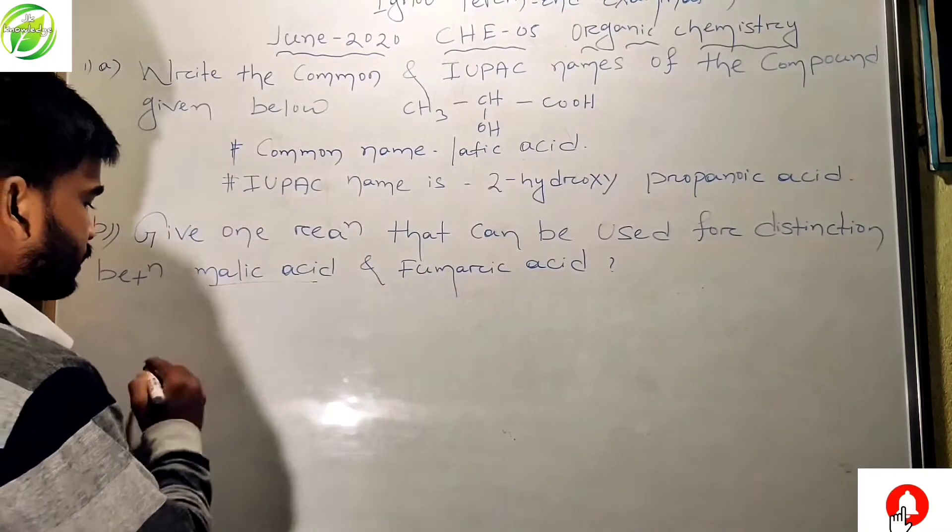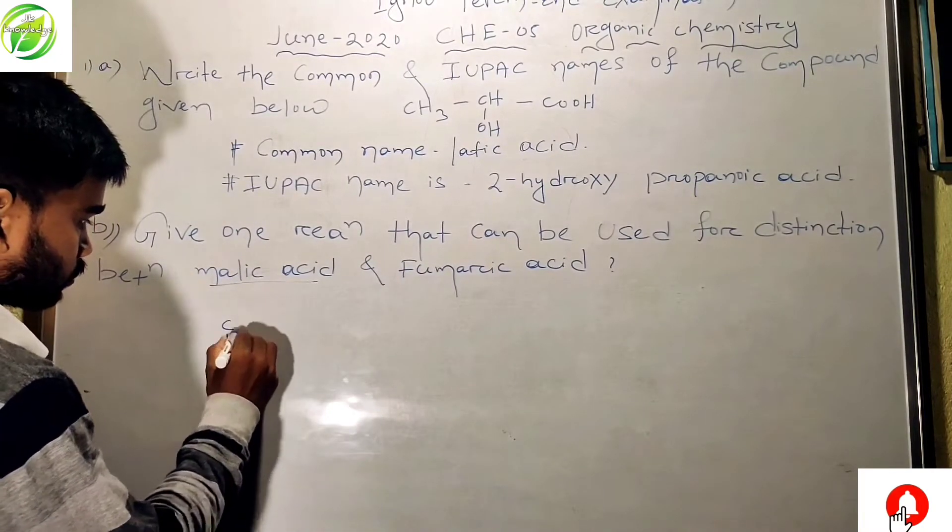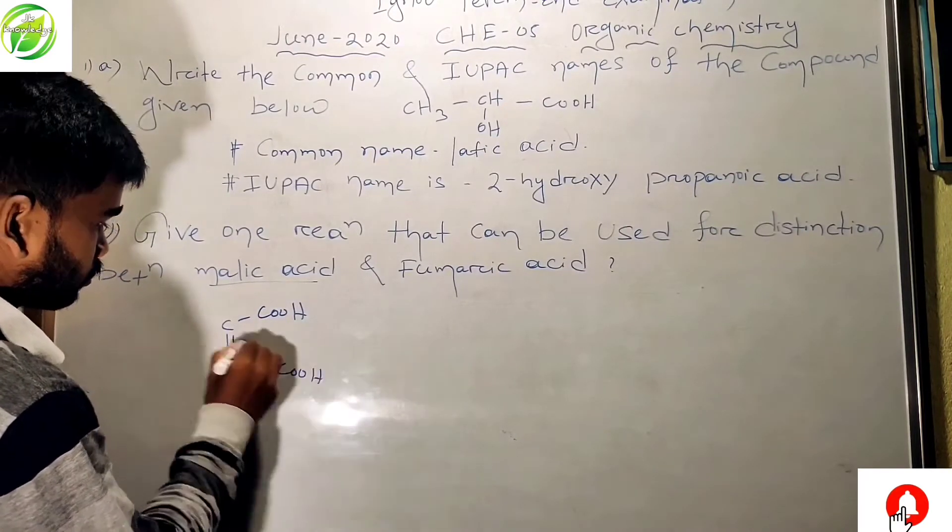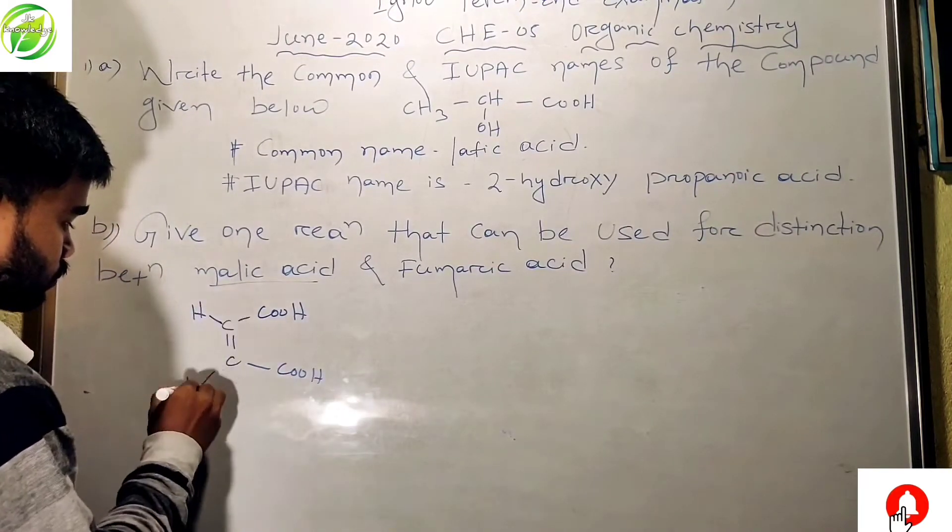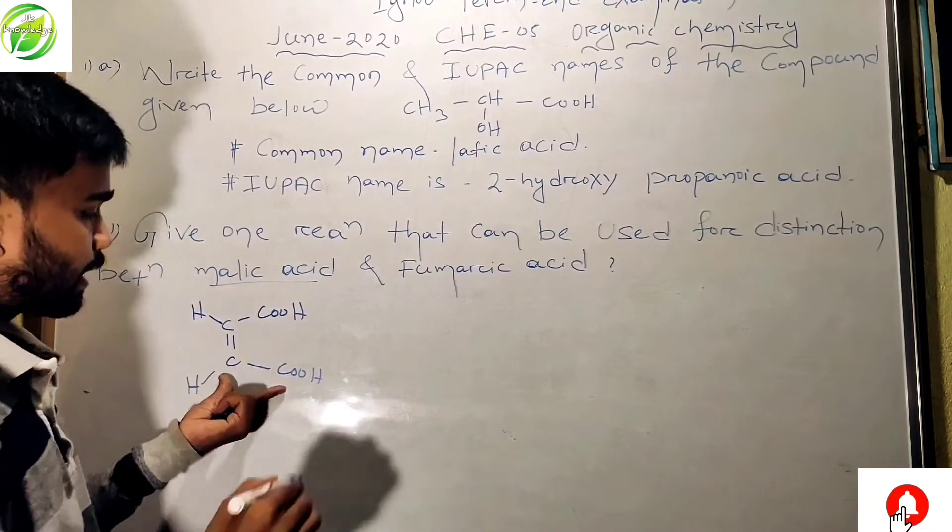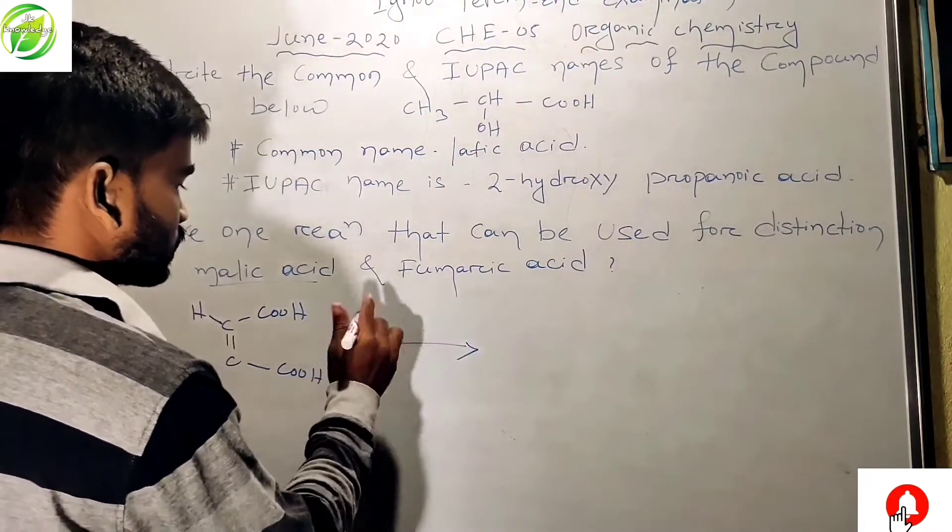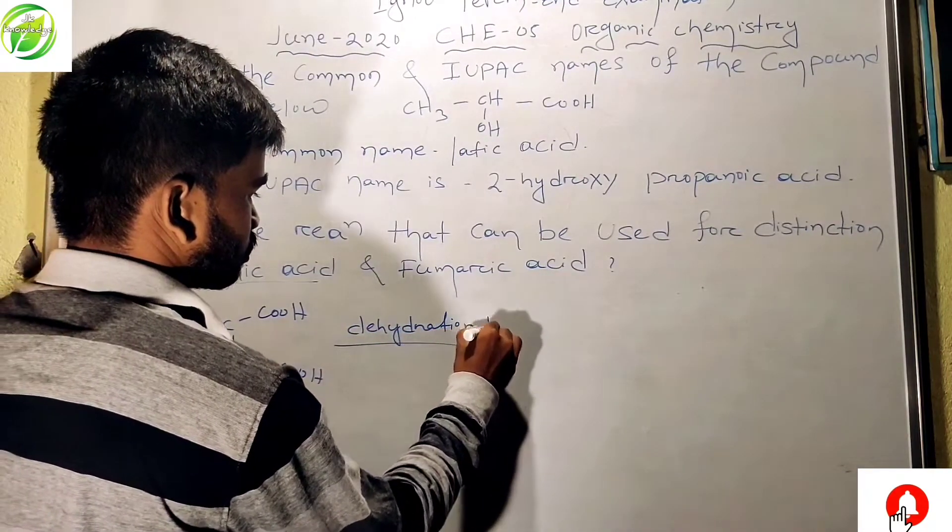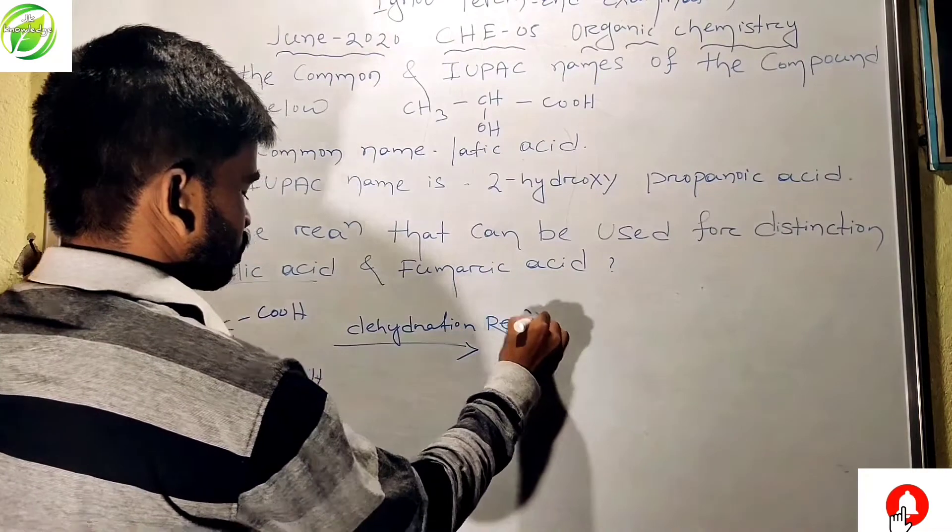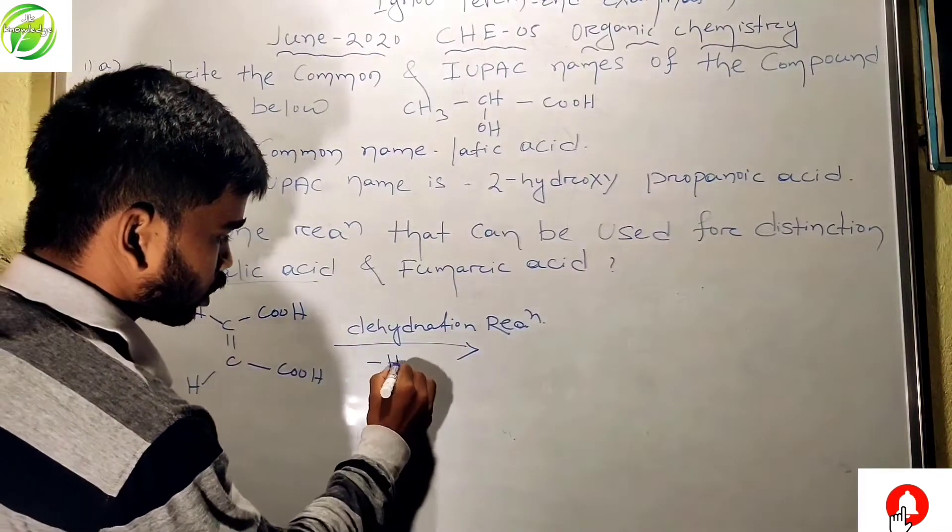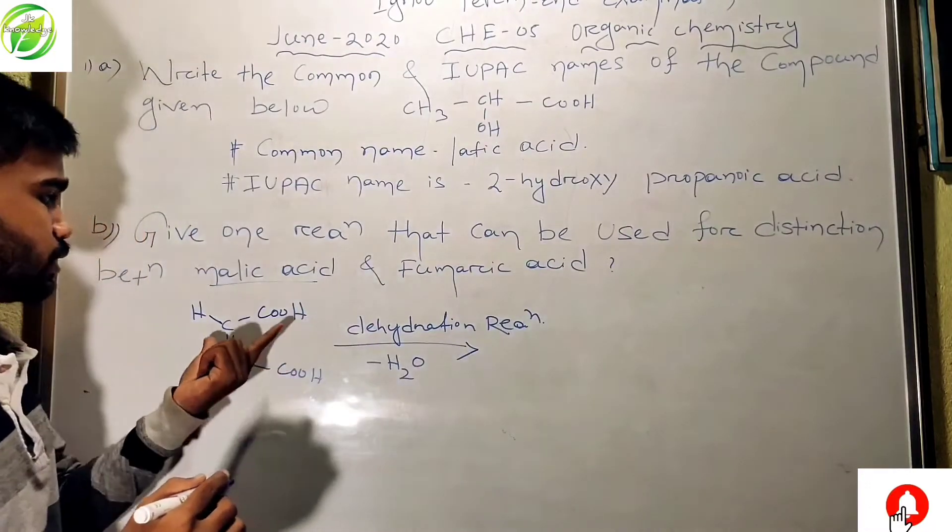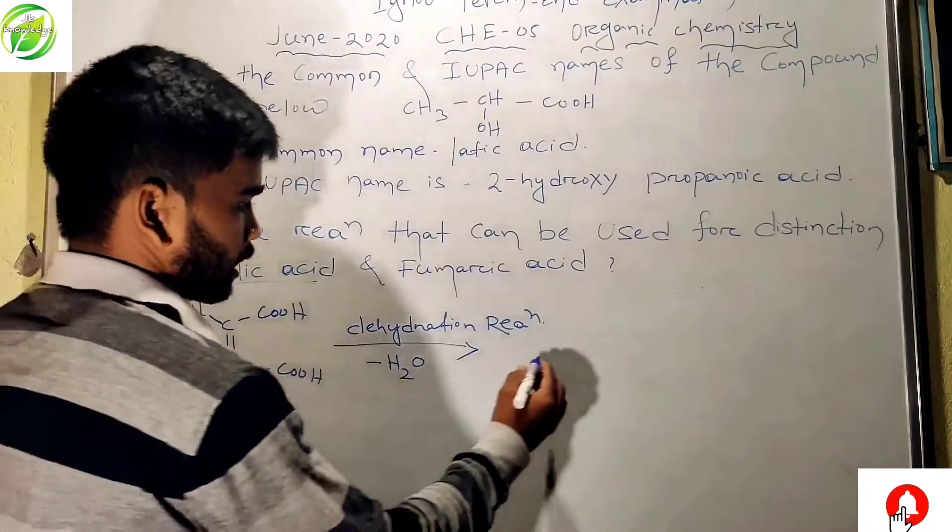The next one is: give one reaction that can be used for distinction between malic acid and fumaric acid. The structure of malic acid... this malic acid goes through a dehydration reaction, meaning the elimination of a water molecule. This malic acid forms its own anhydride, that is malic anhydride.